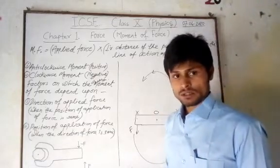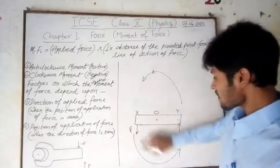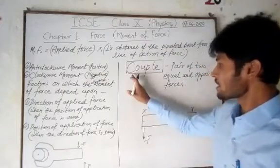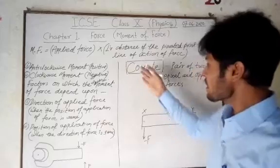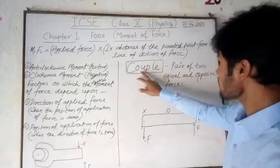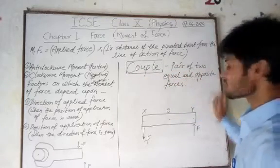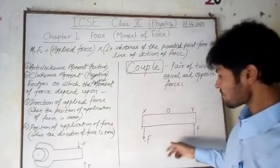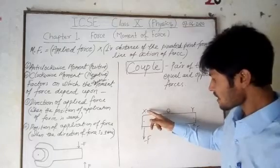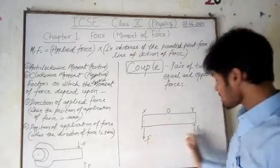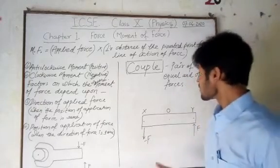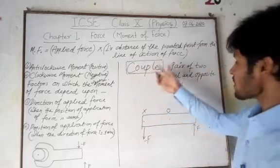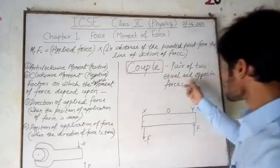So there is a new topic — couple. Couple means a pair of two equal and opposite forces. In this rectangular bar, a force is applied at point Y and the same force is applied at point X, but the forces are opposite in direction. They are equal in magnitude but opposite in direction. We want to calculate the moment of both forces.